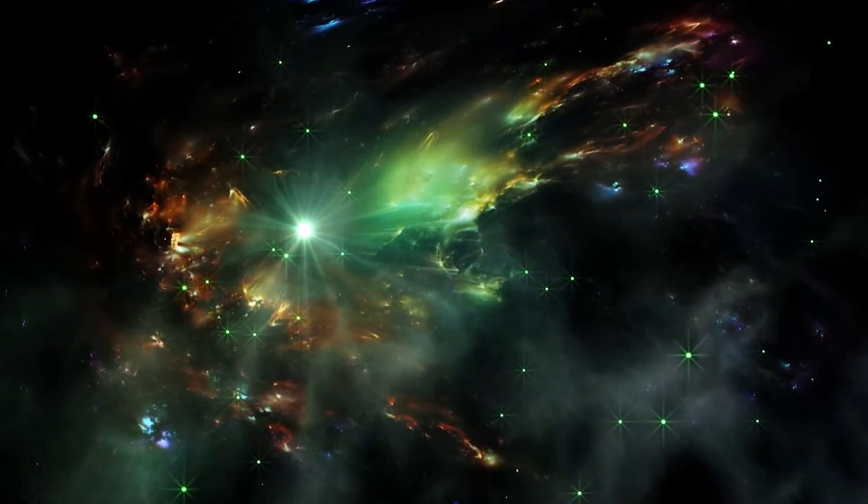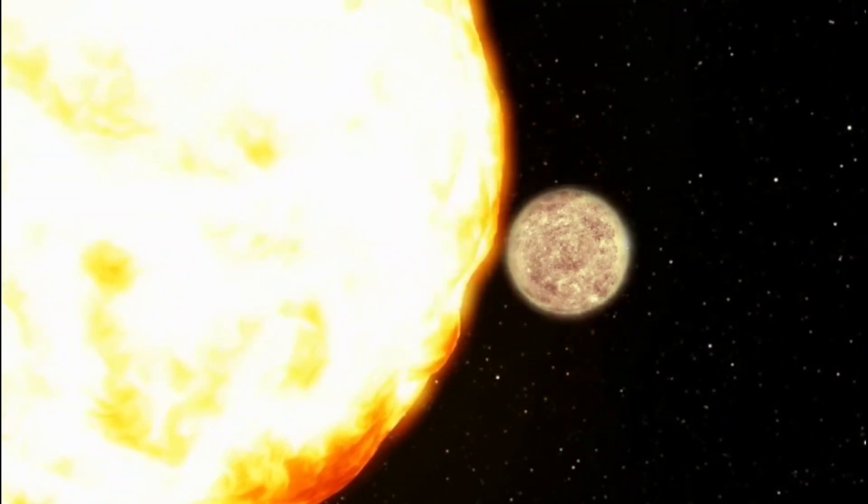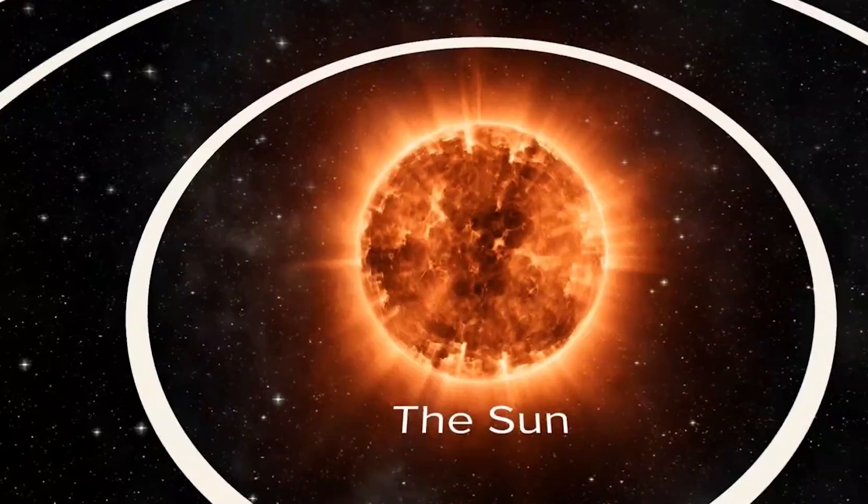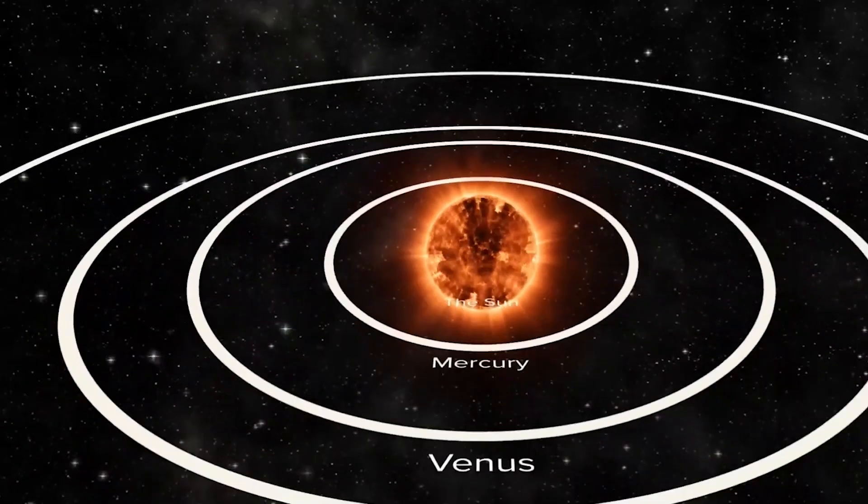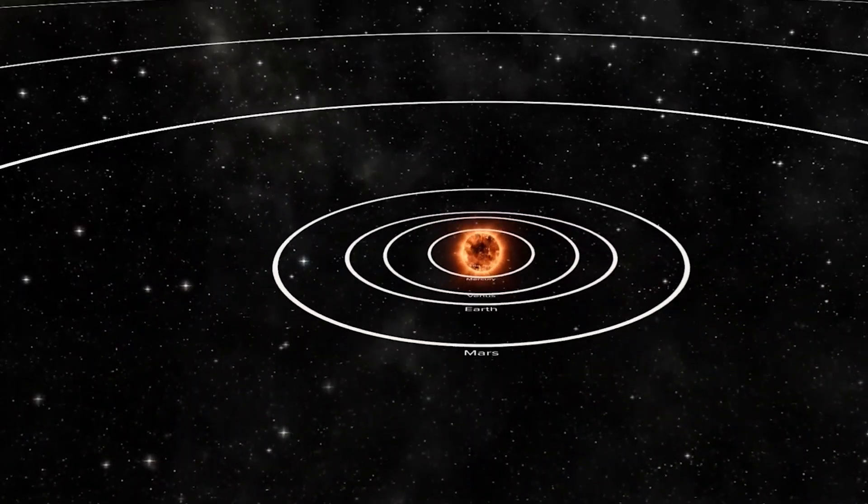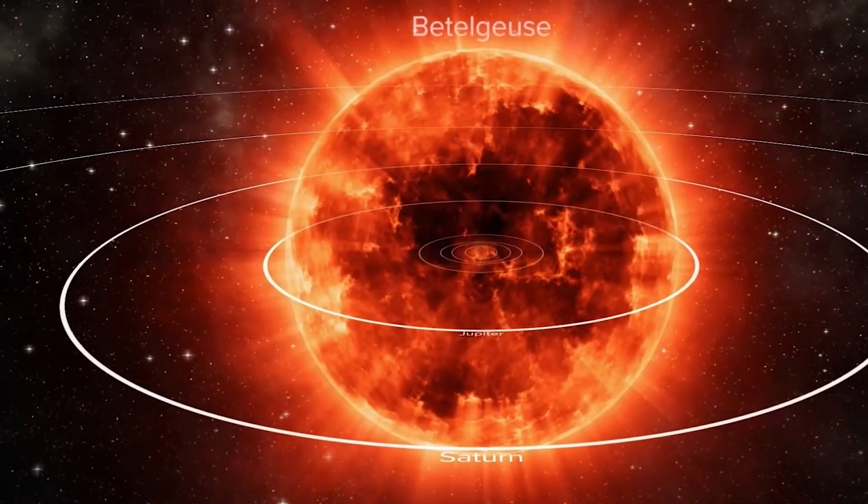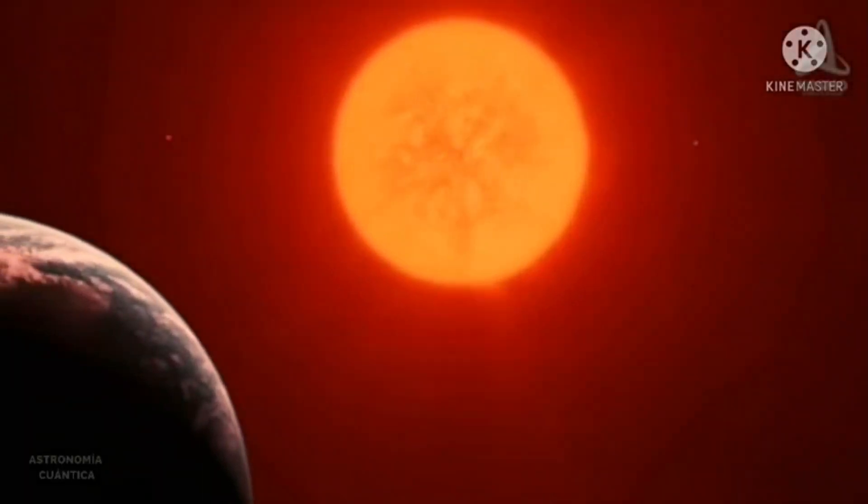Betelgeuse is a true giant, with a diameter more than a thousand times larger than that of our Sun. If we placed it in the center of our solar system, it would engulf the inner planets, including Earth, and reach Jupiter. Its immense size and mass make it a red supergiant star that is approaching the end of its life.